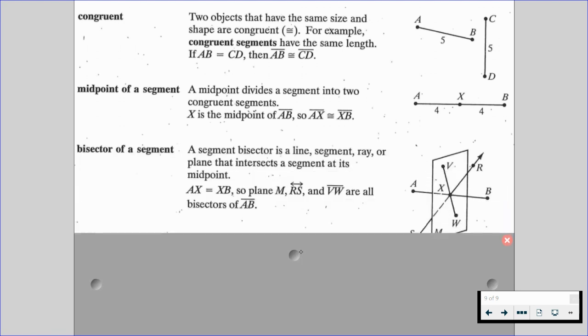And just like when we have a midpoint, we also have the bisector of a segment. A segment bisector is a line, a segment, a ray, or a plane that intersects a segment at its midpoint. So the length of AX is equal to the length of XB. So plane M, line RS, and segment VW are all bisectors of segment AB. They all go through the midpoint of that segment AB.